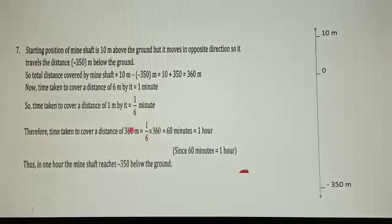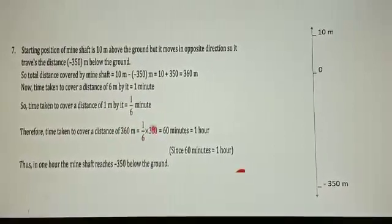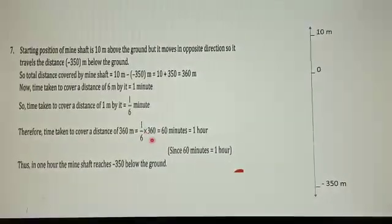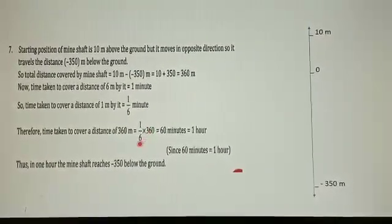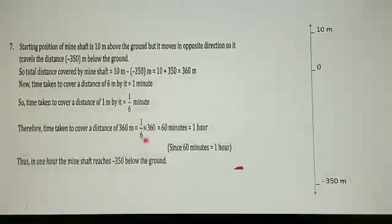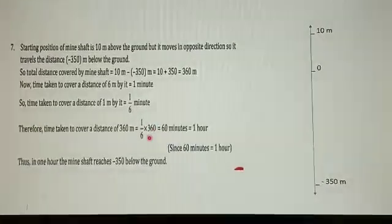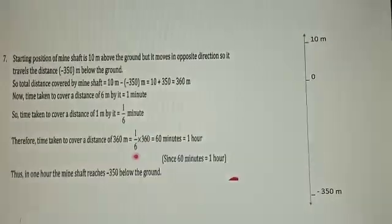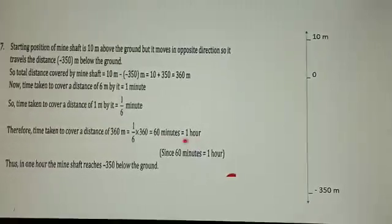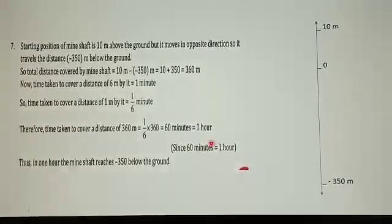Time taken to cover 6 meters is 1 minute. So 1 meter is covered in one-sixth of a minute. Total time taken to cover 360 meters equals time to cover 1 meter multiplied by total distance, which is one-sixth multiplied by 360. Dividing 360 by 6 equals 60 minutes, which means 1 hour.